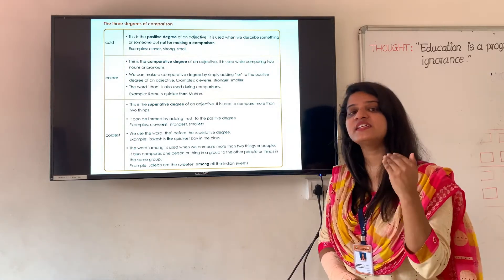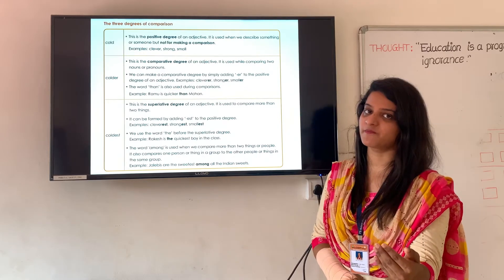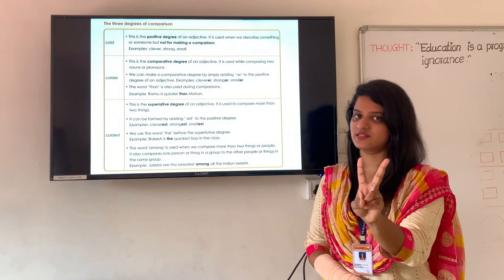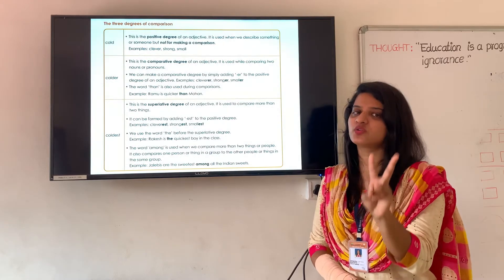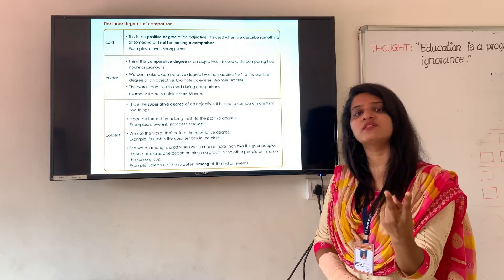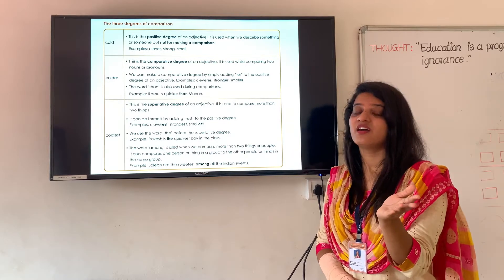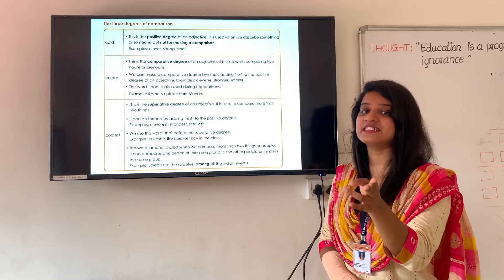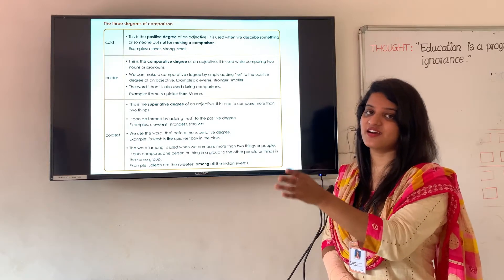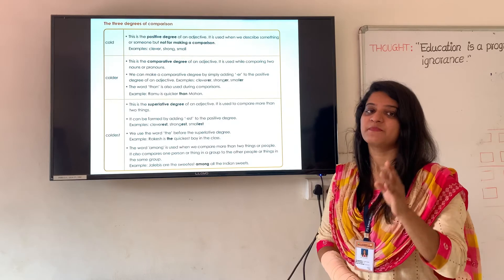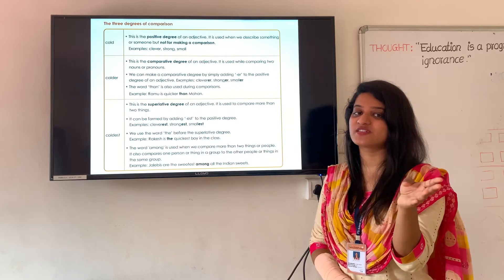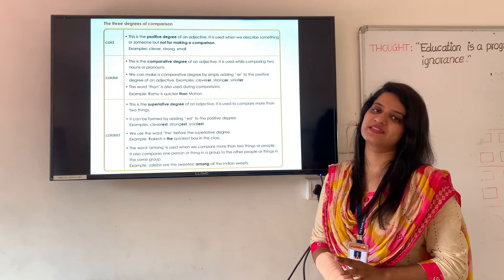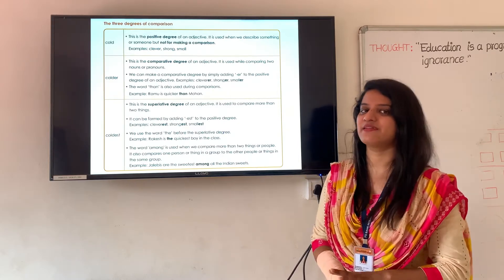These are the 3 forms we use for comparison. Positive degree is used to describe something. Comparative degree is used to compare 2 things — 2 people, 2 places, 2 animals. For example, cheetah is fast, running faster than a tiger. But at the same time you can also say that cheetah is the fastest running animal among all animals.